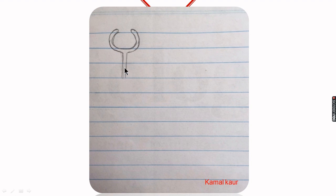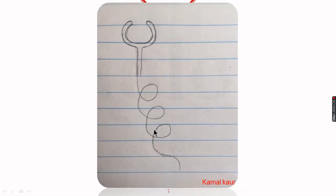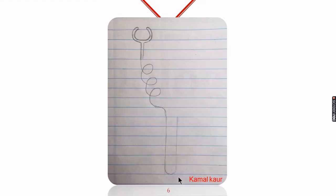This is the tubular part of the nephron which is highly convoluted and twisted. We need to give it a twist now — at least 3 twists. Bring it slightly towards the right side and then take it down to at least 7 lines. It should go straight down 7 lines minimum.